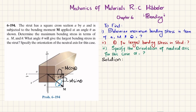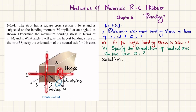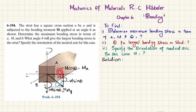The vertical component is minus M sinθ. Let this be point A and this be point B. The z-axis and y-axis are as shown. The moment about the z-axis is Mz and the moment about the y-axis is My.